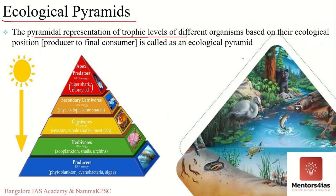If you picture a pyramid, it always has a larger base which reduces in width as you move away from the base, and the pyramid is made up of several blocks. Similarly, an ecological pyramid is made up of bars where each bar represents a different trophic level and shows the energy, biomass, or number of organisms at that trophic level.